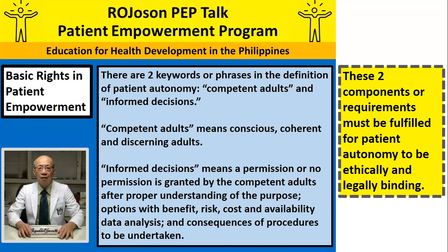Competent adults means conscious, coherent, and discerning adults. Informed decisions means a permission or no permission is granted by the competent adults after proper understanding of the purpose, options with benefit, risk, cost, and availability data analysis, and consequences of procedures to be undertaken. These two components or requirements must be fulfilled for patient autonomy to be ethically and legally binding.